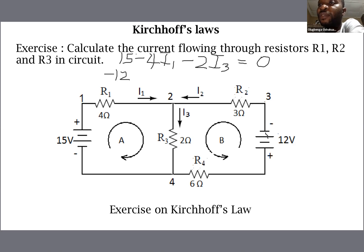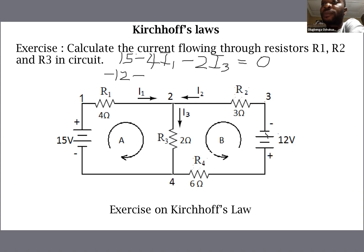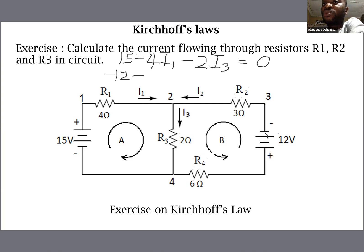Leaving the battery, we reach resistor R2. I2 flows through R2, so there will be a voltage drop of I2·R2, giving minus because the anticlockwise navigation direction agrees with the direction of I2. Since R2 is 3 ohms, we write minus 3I2.